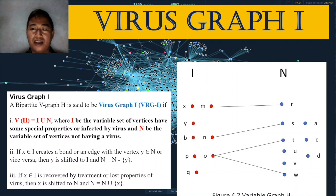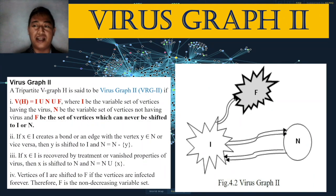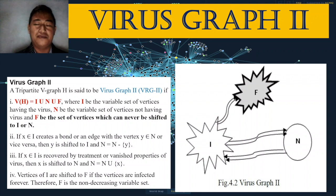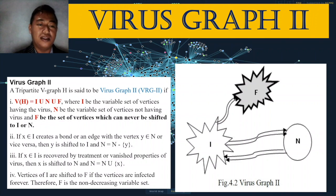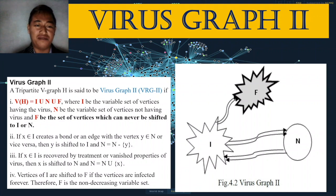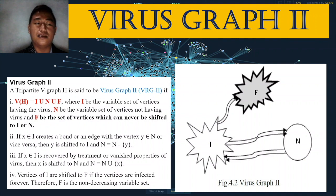Now for virus graph two. As you can see in the figure, it now includes a set F. A tripartite V-graph H is said to be a virus graph two if V(H) = I ∪ N ∪ F, where I is the variable set of infected vertices, N is the variable set of vertices not having the virus, and F is the set of vertices which can never be shifted to I or N. So set F contains vertices that can never be shifted to I or N — we will see what that means.